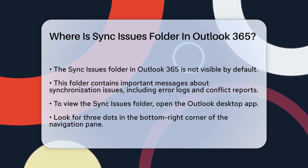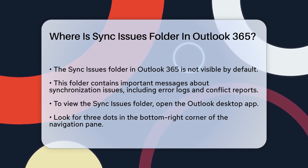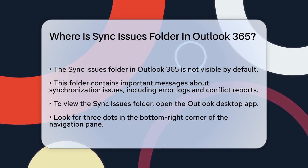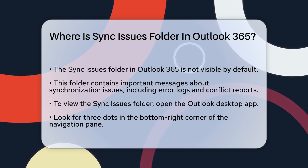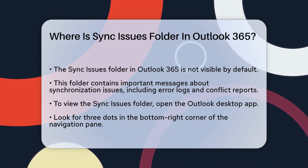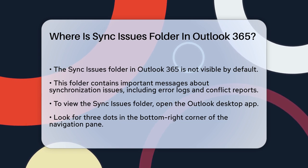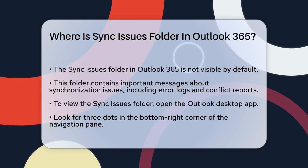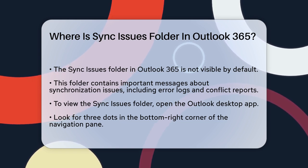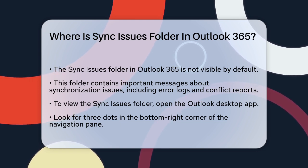First, it's important to know that the Sync Issues folder is not visible by default in Outlook. This folder is crucial because it stores messages that contain information about synchronization issues, such as error logs and conflict reports.